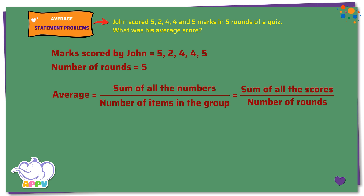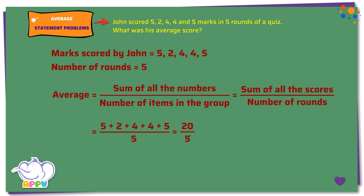Let's write the sum of all the scores first. 5 plus 2 plus 4 plus 4 plus 5, then we have the number of rounds equals 5. Total score is 20. This becomes 20 by 5, which is equal to 4. So, the average score is 4.